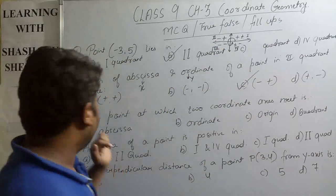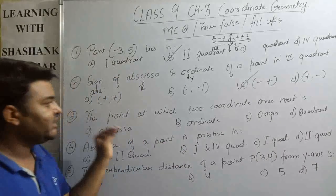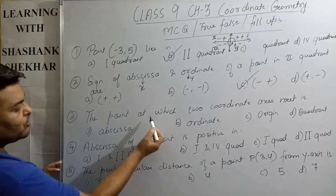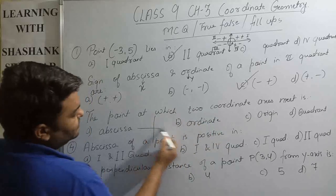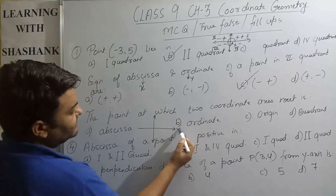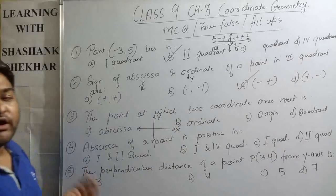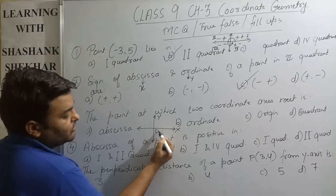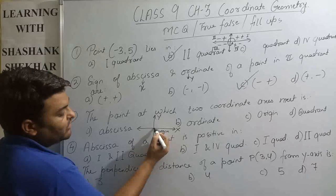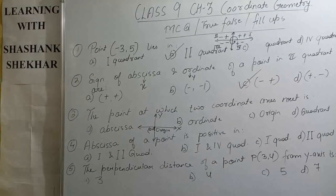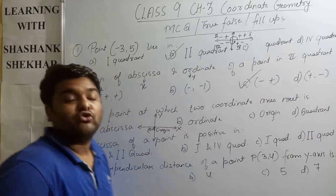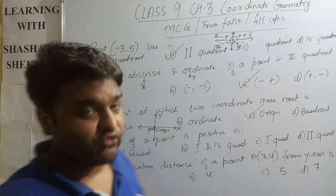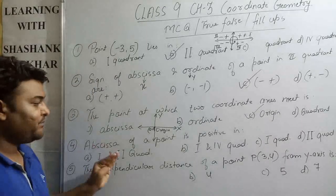Question three: the point at which the two coordinate axes meet. We have the horizontal axis — the x-axis — and the vertical axis — the y-axis. The meeting point of the x-axis and y-axis is called the origin. The coordinates of the origin are (0, 0). So option C, origin, is correct.